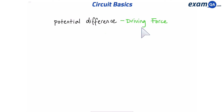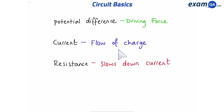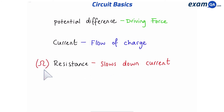Quick summary: potential difference is the driving force, current is the flow of charge, and resistance slows down the current. Resistance is measured in ohms, current is measured in amps, and potential difference is measured in volts.